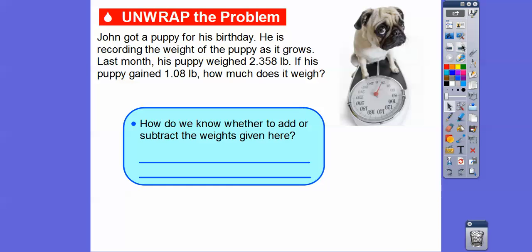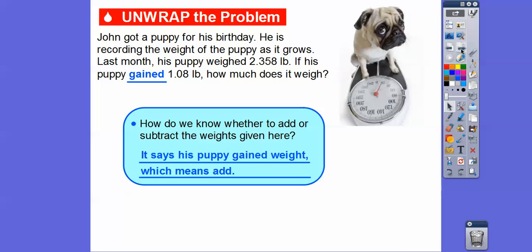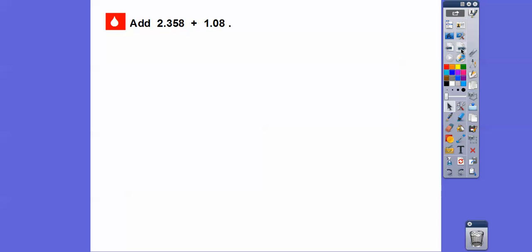So how do we know whether to add or subtract the weights given here? Well, since he weighed this much, and he's gaining this much, the word gained tells us we're going to add those numbers together. So let's add 2.358 plus 1.08. Let's estimate first. I'm going to round this to 2.5 and round this to 1. So 2.5 plus 1 is going to give us 3.5.